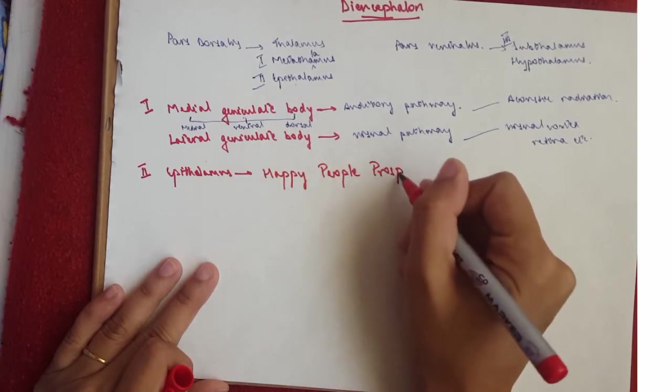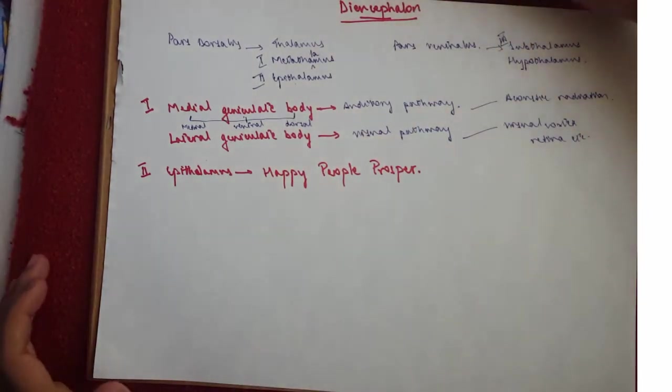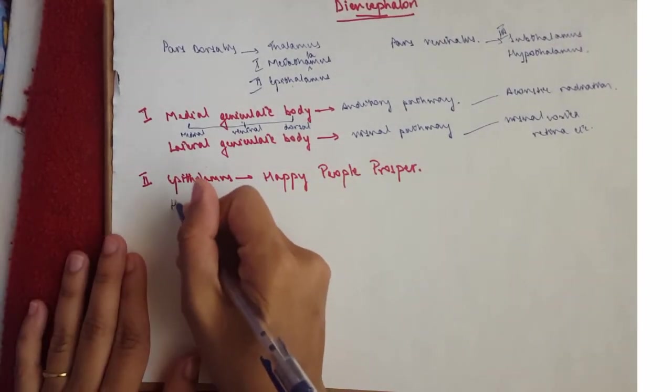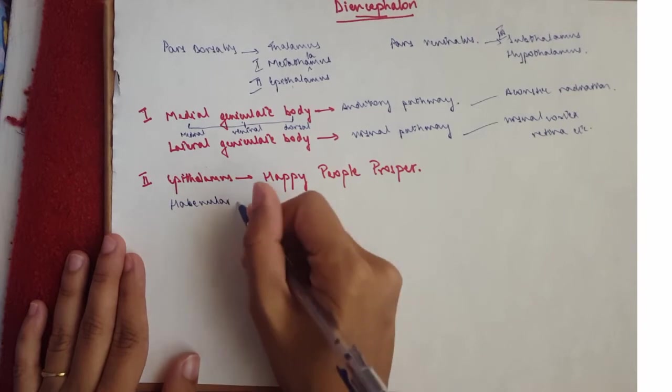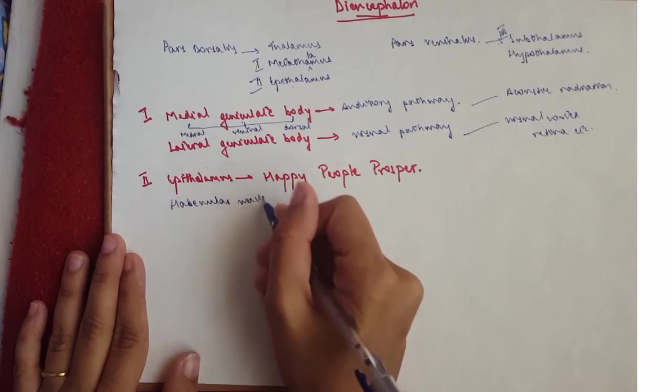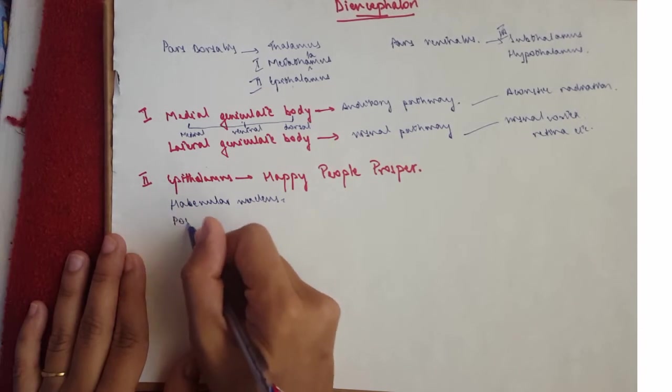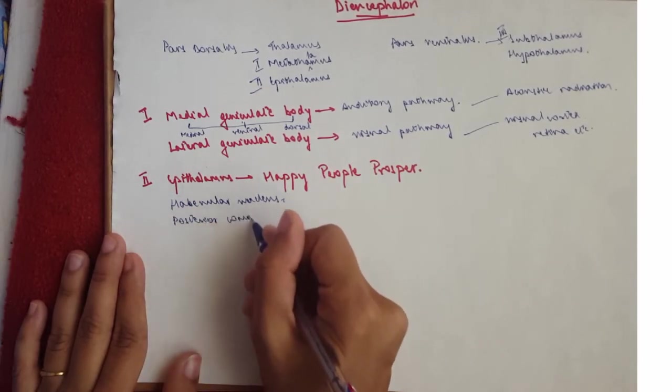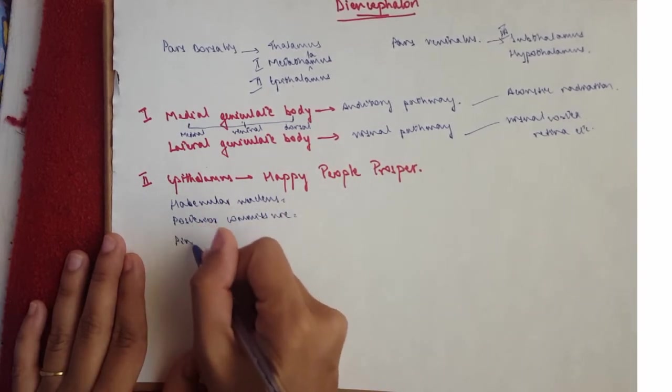And this mnemonic is for the structures that are contained within this region, the epithalamus. So Happy stands for the habenular nucleus. P stands for the posterior commissure. And the other P stands for the pineal gland.